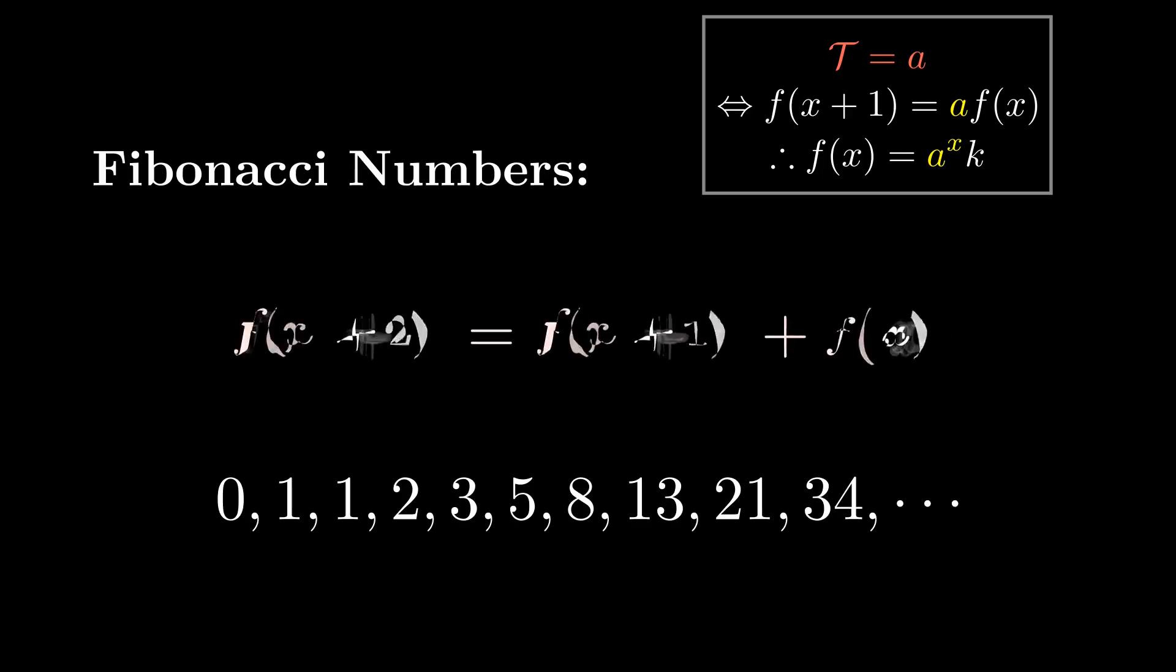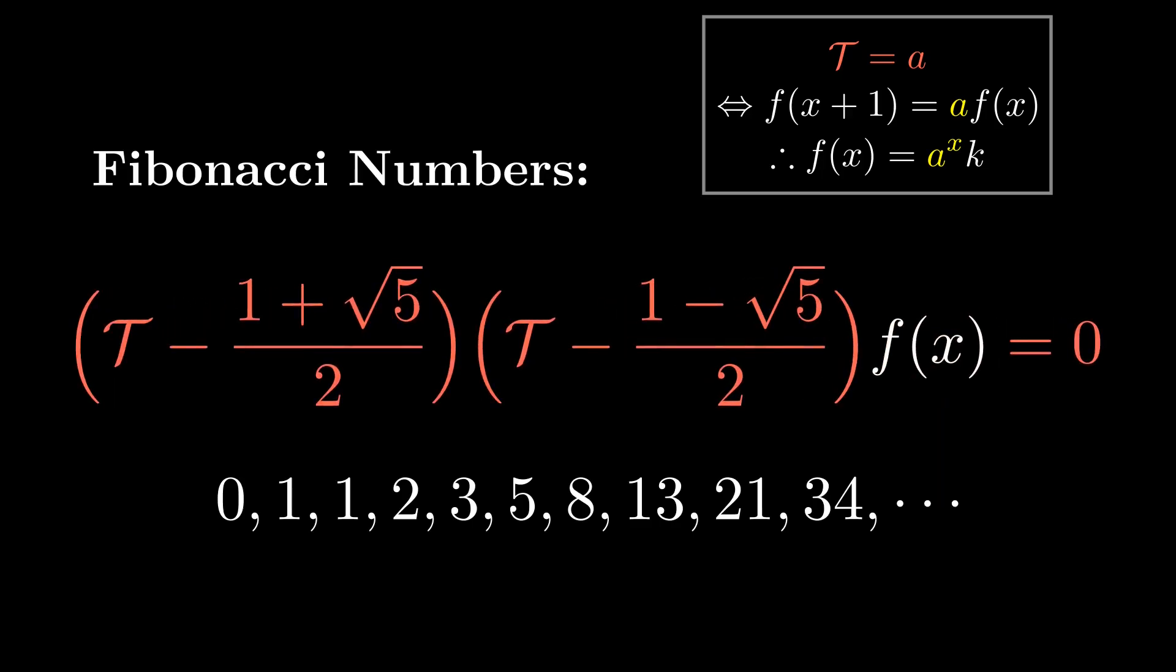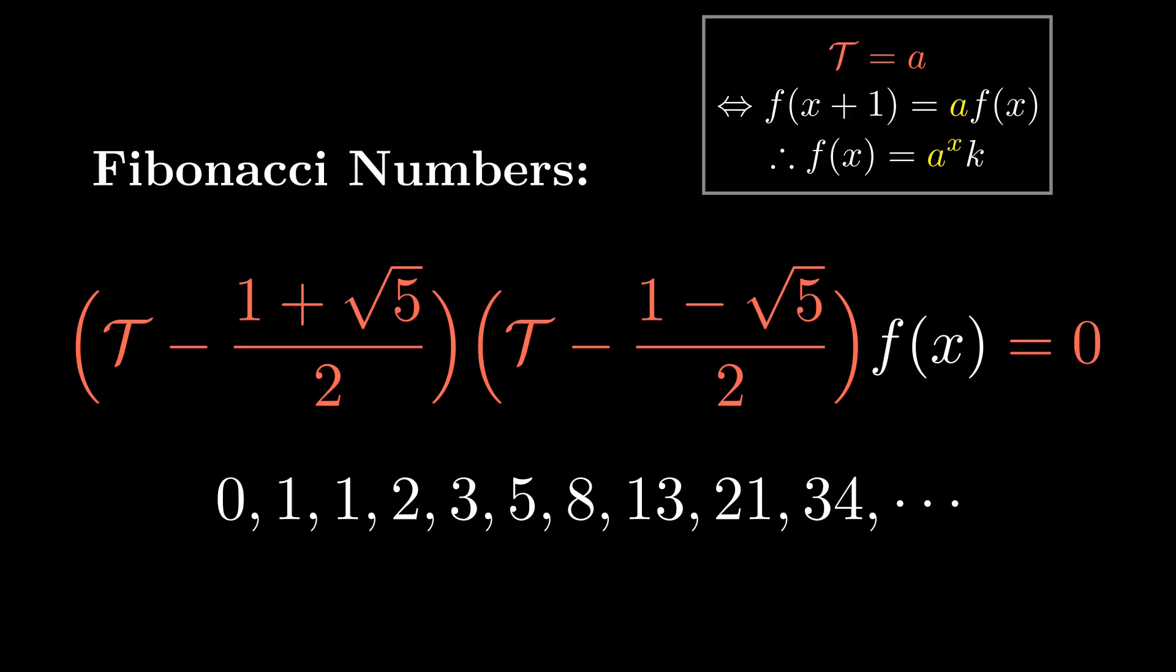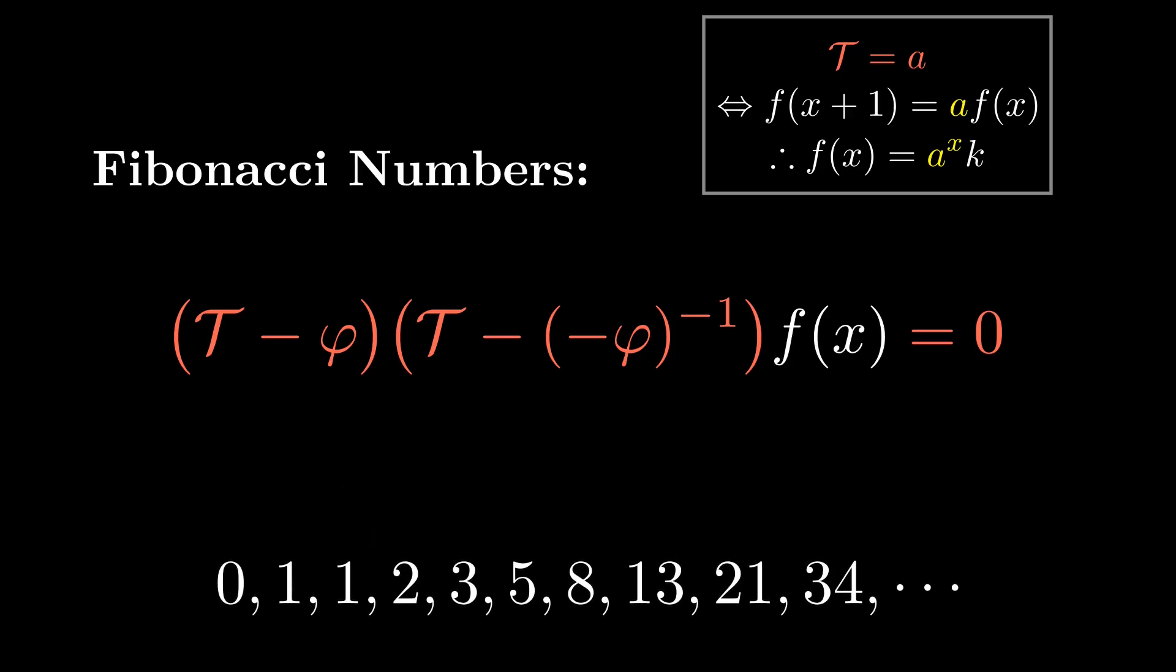Which we can express in terms of T, like so. Factoring, the roots of this quadratic are 1 plus or minus the square root of 5 over 2. Which you may recognize as the golden ratio and its conjugate.